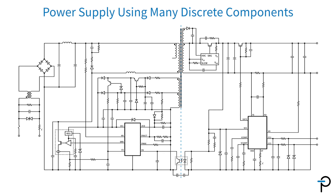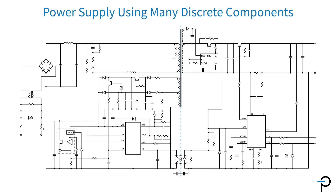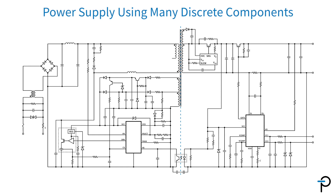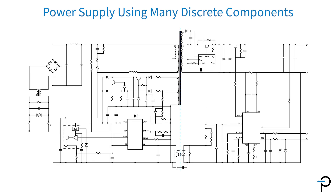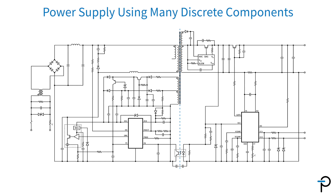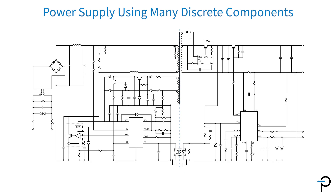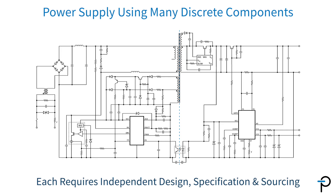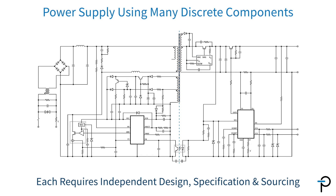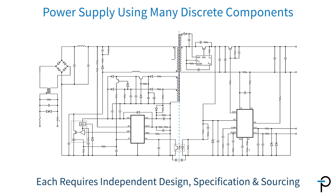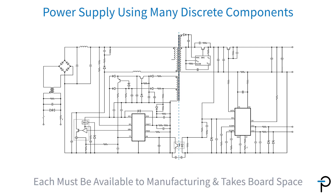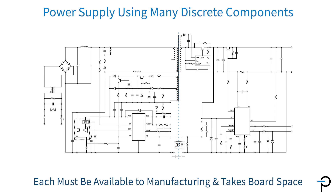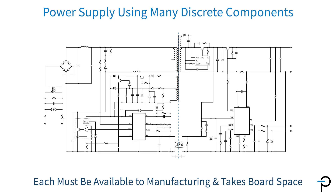Here's an example of a power supply that's been built using discrete components. What you'll notice immediately is the large number of components on the power supply. Each one of those has to be independently designed, specified, sourced, and made available to manufacturing, and takes up space on the board.